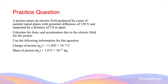A proton enters an electric field produced by a pair of parallel metal plates with a potential difference of 150 volts, separated by a distance of 2 meters. Calculate the force and acceleration due to the electric field for the proton. We can use the following information: the charge of a proton and the mass of a proton.